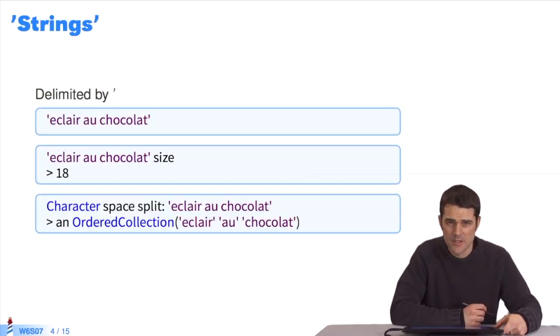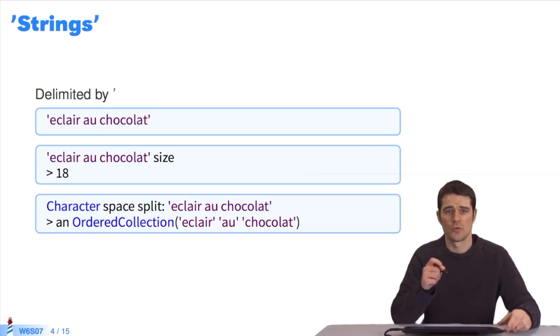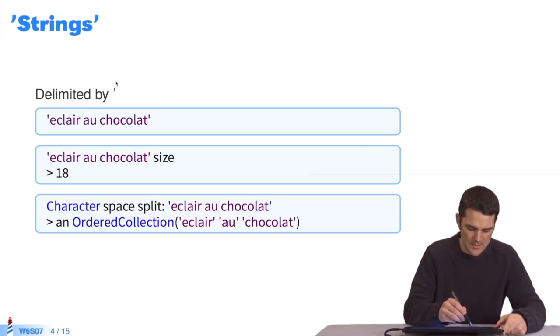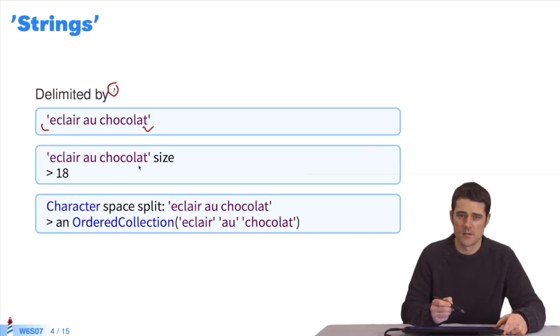Now for strings. Strings of characters are delimited by single quotes. This character right here. Here we have the string Eclair au Chocolat. It starts here and ends here. We can send it a message, for example size, and it sends back 18. Indeed, this string contains 18 characters.